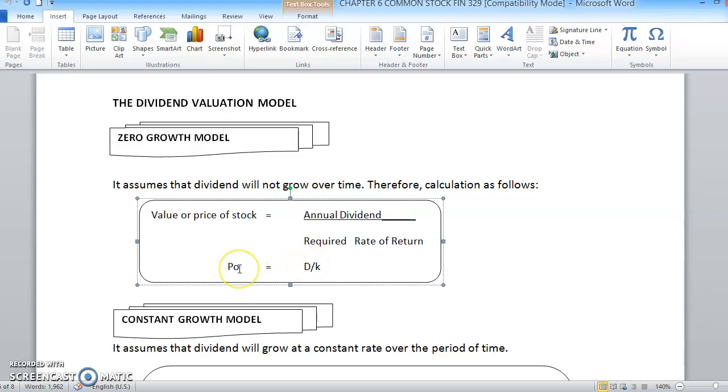So apabila untuk pengiraan zero growth model, kita ambil formulanya sebagai P0 equal to D dividend bahagi dengan K. So perhatikan di sini dividend single, dia ada apa-apa growing rate. Sebab tu kita panggil dia sebagai zero growth model.